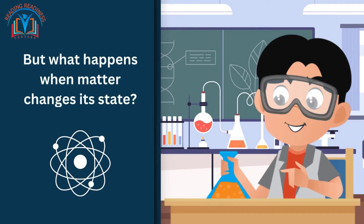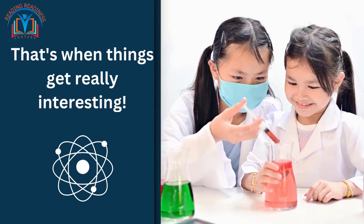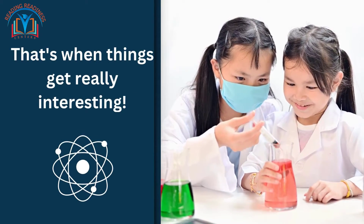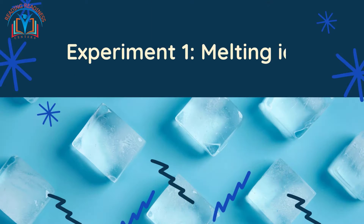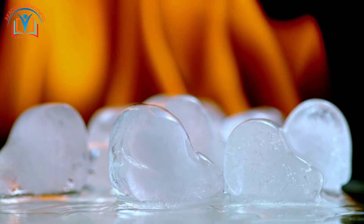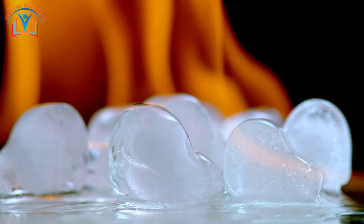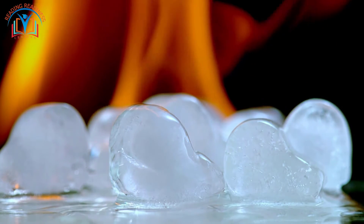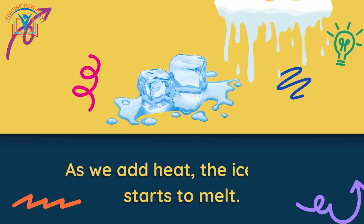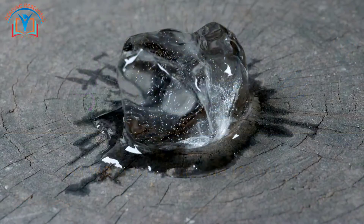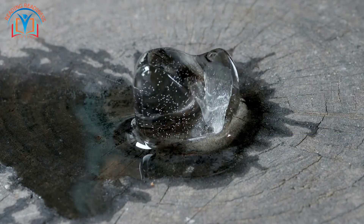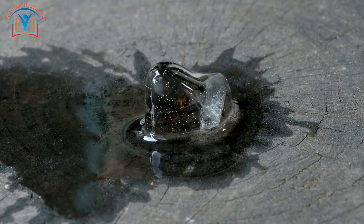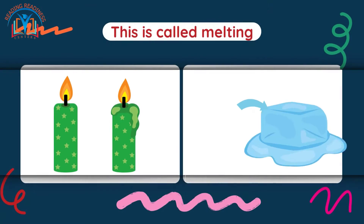But what happens when matter changes its state? That's when things get interesting. Experiment one: melting ice. Let's see this in action — we have an ice cube. What happens when we add heat? As we add heat, the ice cube starts to melt. The solid water molecules gain energy and move more freely, turning into liquid water. This is called melting.